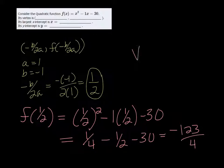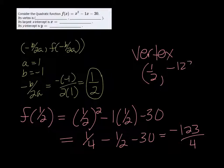So the vertex, then, is positive 1 half, comma, negative 123 over 4.